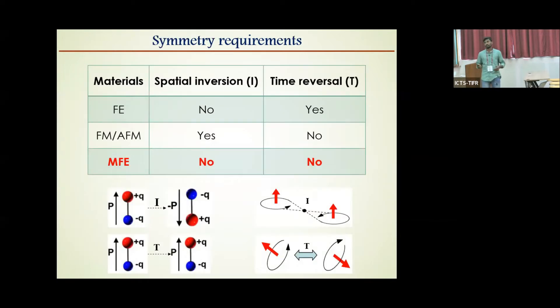However, material to show these multiferroic properties, there are some symmetry requirements. Material to be ferroelectric must break the spatial inversion symmetry, whereas in all long-range magnetic order systems like ferromagnets and anti-ferromagnets, the time reversal symmetry is broken. Similarly, material to be multiferroic must break both spatial inversion and time reversal symmetry.